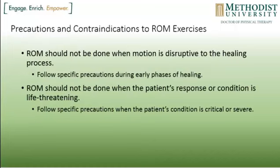When should you not perform active range of motion? When it's disruptive to healing — specific precautions apply early postoperatively or early following an injury. If someone has a grade 3 tear and you start actively contracting the torn muscle, you may be causing more damage than benefit. Range of motion should not be done when the patient's response is life-threatening; always worry more about the patient's overall health than their specific joint condition.